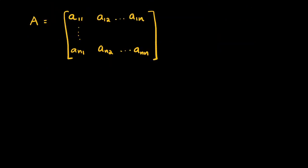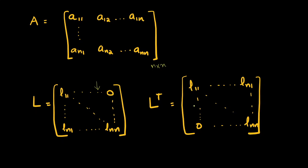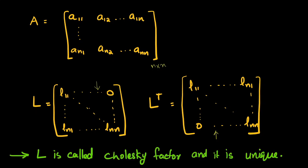If we represent matrix A as an n-by-n matrix with elements A₁₁, A₁₂, …, A₁ₙ, then the Cholesky factor L is a lower triangular matrix where the upper part is all zeros and the lower part contains positive diagonal values. L-transpose is the upper triangular form — its lower part is zero and the upper elements including diagonal are positive. L is unique for every symmetric positive definite matrix A.